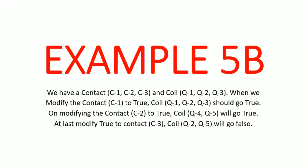Now we will head on to the 5b example. In example 5b we have contacts c1, c2, c3 and coils q1, q2, q3, q4, q5. When we modify c1 to true, coils q1, q2, and q3 will go true. On modifying c2 to true, coils q4 and q5 will go true. After modifying c3 to true, coils q2 and q5 will go false.